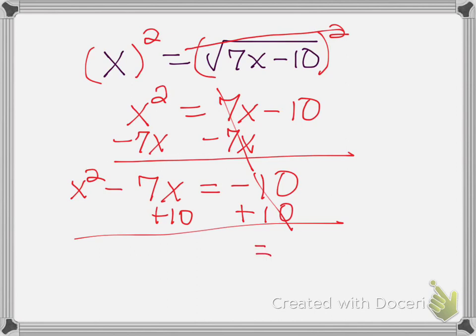Negative 7x and 10 are not like terms so I'll just write it all the way out. So that leaves me with x squared minus 7x plus 10 equal to zero. Since I have an x squared, I have to factor this trinomial in order to get my factors and my two values for x.